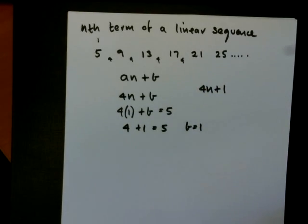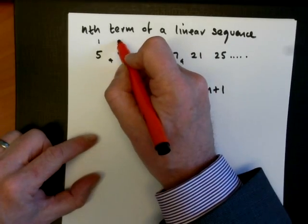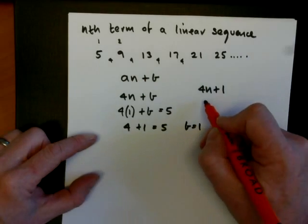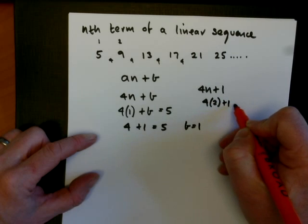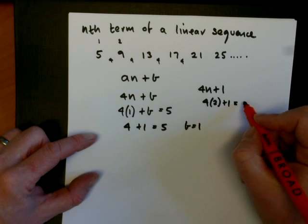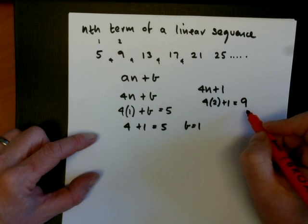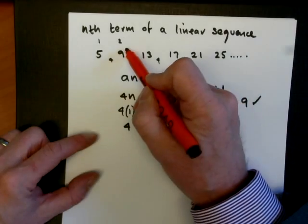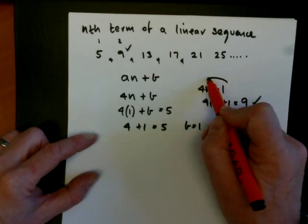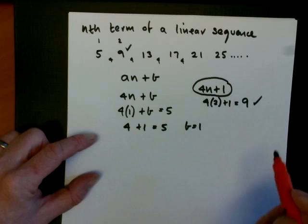Now you can check, of course, because you can go to the second term where n is 2. You can put 4 times 2 plus 1, which is 8 plus 1, which is 9. And you can see that that agrees. So you now know that 4n plus 1 is correct.